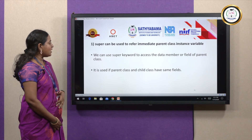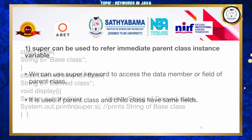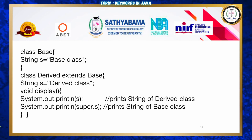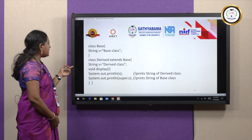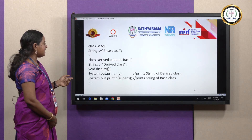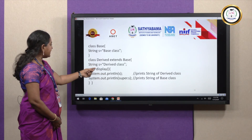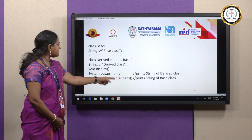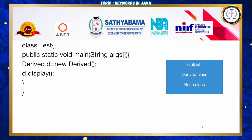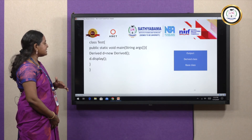First — super to refer to the immediate parent class instance variable. It is used to access data members of a parent class when both parent and child class have the same field name. In the example, class Base has a String variable 'yes' and class Derived also has 'yes'. In the display method, 'yes' refers to the derived class variable, and 'super.yes' refers to the base class variable. Creating a Derived object and calling display shows both messages.